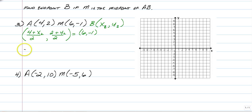So just set up the equation parts. 4 plus x over 2 is equal to 6. And 2 plus y over 2 is equal to negative 1. And just solve both of those equations.